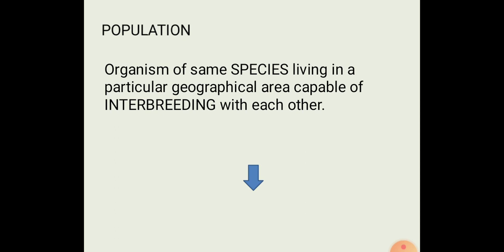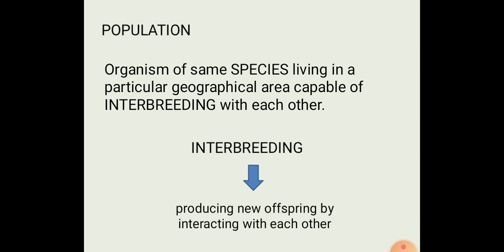What is population? Population is all the organisms of the same species living in a particular geographical area and capable of interbreeding with each other. There are two terms here: interbreeding and species. What is interbreeding? Interbreeding is producing new offspring by interacting with each other.